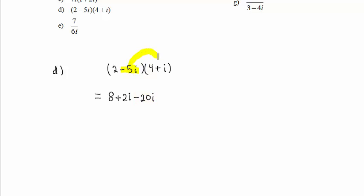And lastly, we have negative 5i times positive i, that is negative 5 times i squared. Let's deal first with this i squared. i squared is negative 1. So this last term, we have negative 5 times negative 1, that's positive 5.